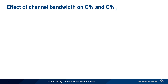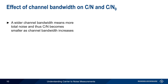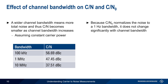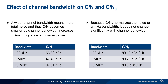Before we conclude, it's worth pointing out that varying the channel bandwidth in a carrier-to-noise measurement will affect the results. The carrier-to-noise ratio will decrease as channel bandwidth increases, assuming the carrier power remains constant. This is because wider bandwidths will increase the total noise power, and thus lower the carrier-to-noise ratio. On the other hand, because carrier-to-noise density normalizes the noise to a 1 Hz bandwidth, changing the channel bandwidth does not lead to any significant change in carrier-to-noise density, assuming the noise is white or uniformly distributed across the channel bandwidth.